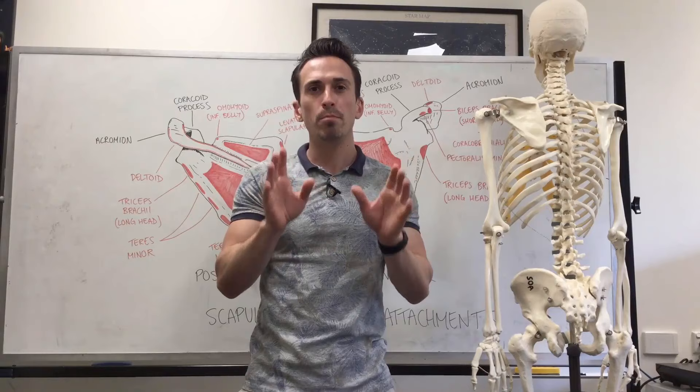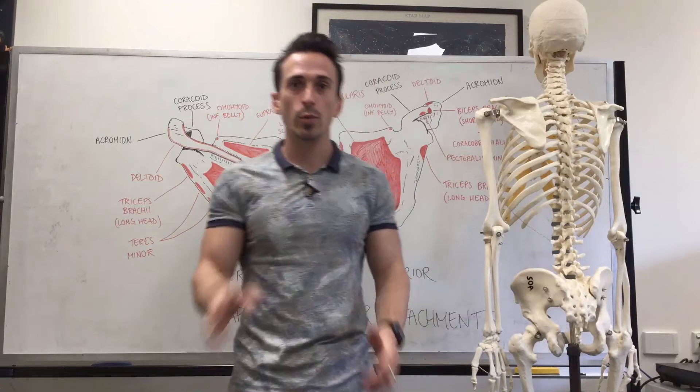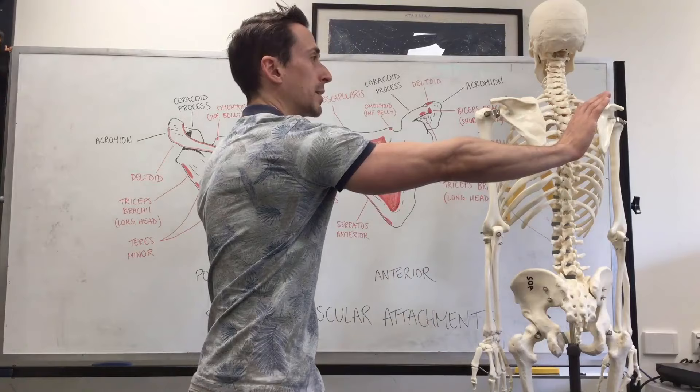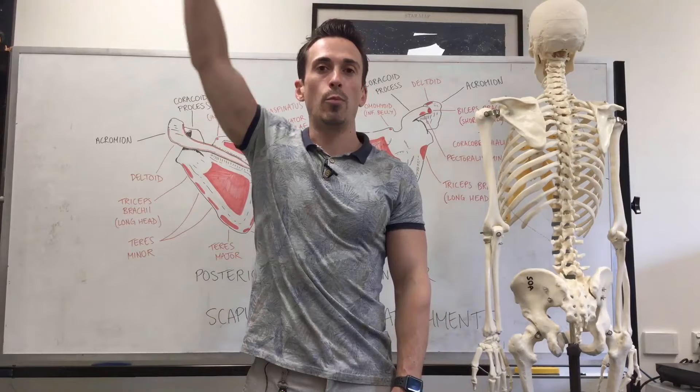So what are the muscles we need to look at when it comes to scapular movement, and what are these actual movements? We know that we can elevate the scapula, we can depress the scapula, we can protract the scapula, retract the scapula, and we can also have lateral or upward rotation and medial rotation.